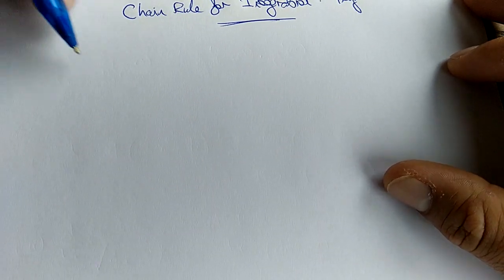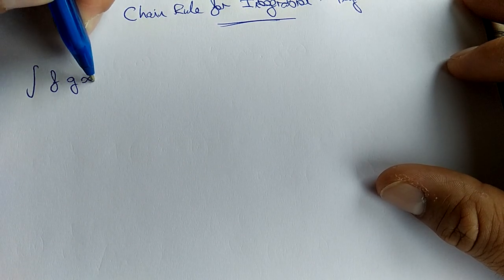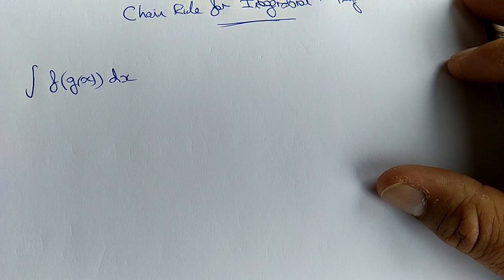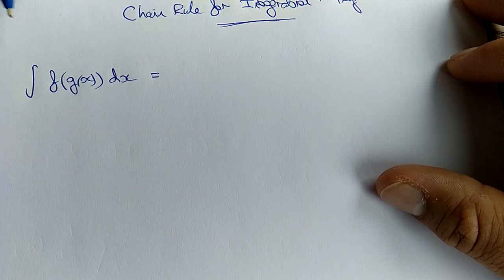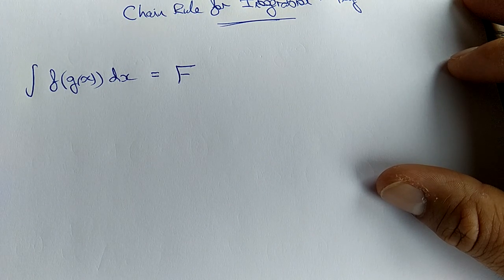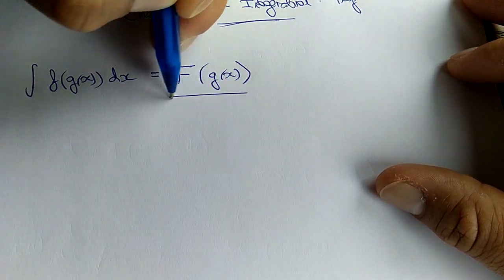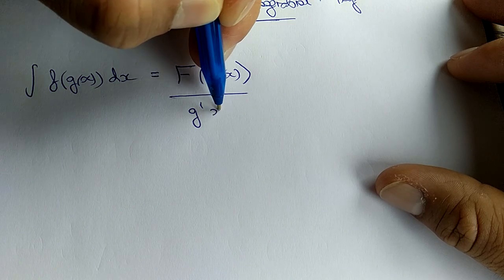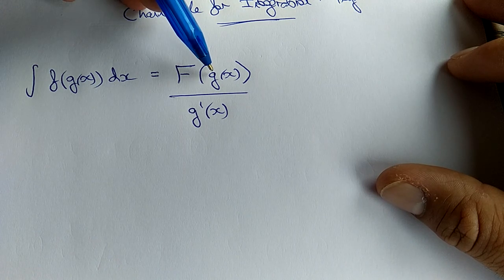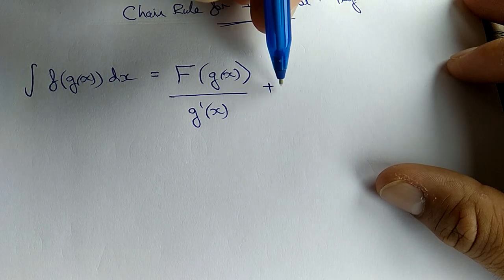The chain rule for integration is that if you're going to integrate a function within a function, this is our inside function and this is our outside function, then the rule dictates that you integrate the outside function. I'm going to use capital F to denote the integral of the outside function. Do not change what's inside the brackets, and then divide by the derivative of what's inside the brackets. I do mean derivative, even though we're integrating. You need to differentiate the function inside and divide by it, and don't forget plus C.